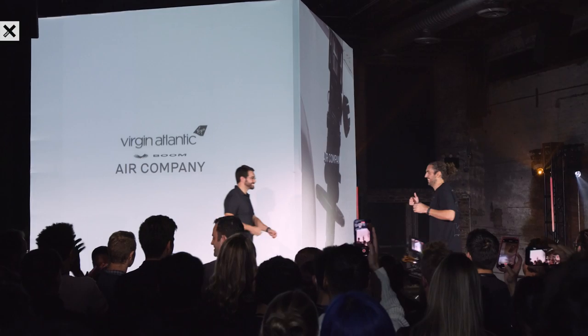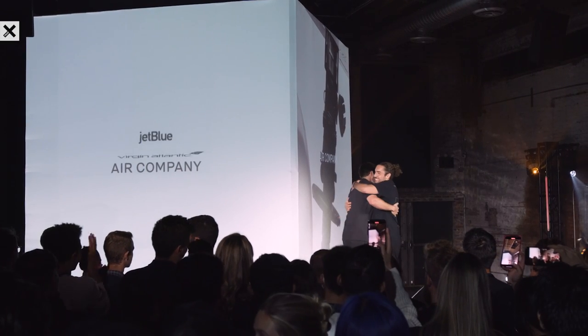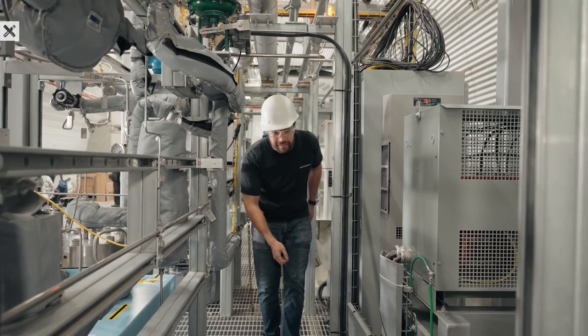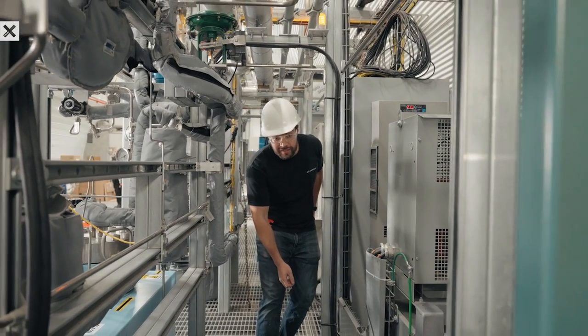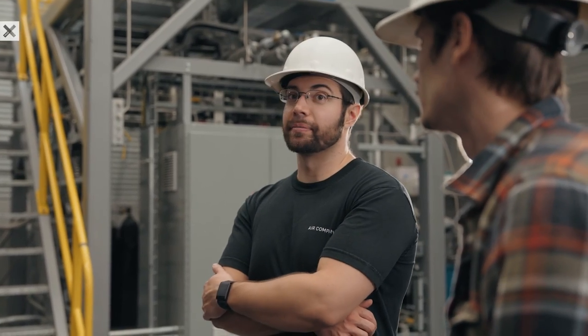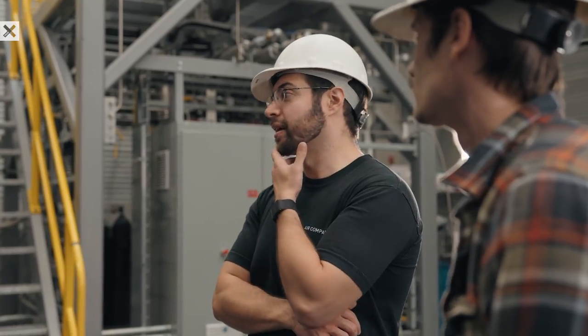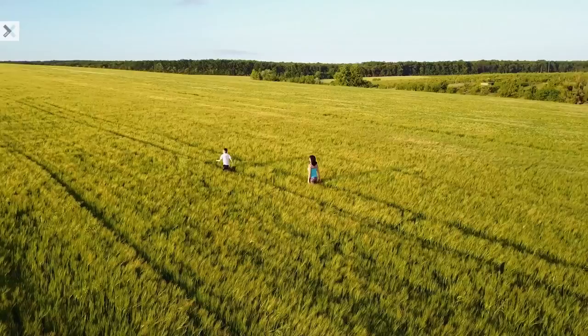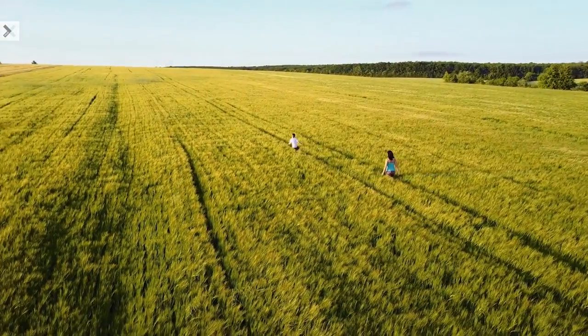Commercial production of our jet fuel starts in 2027, and we have offtake from companies like JetBlue and Virgin Atlantic. In the future, we're working with different organizations to license our technology so that people can essentially deploy their own systems that use Air Company's technology. And that's very important because we want to have hundreds of these systems around the world. And that's something that we need collaboration and a lot of different groups working together to do.